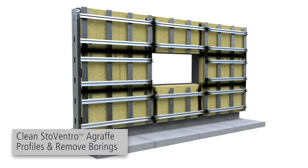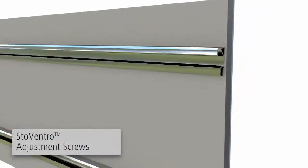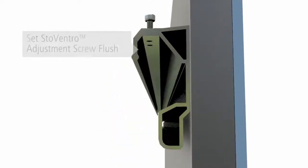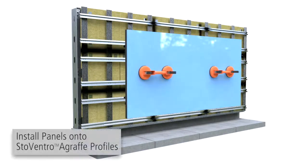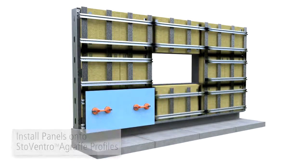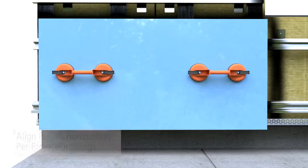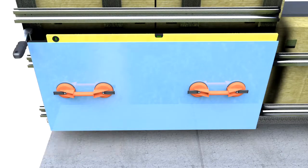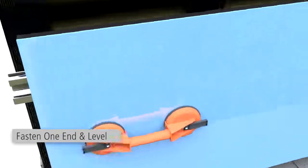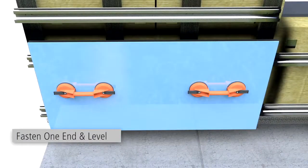Prior to glass installation, clean the agraf profiles and remove borings. On both sides of the panels, screw StoweVentro adjustment screws into the panel profile. Set the screw flush for maximum engagement. Using suction cups for lifting, install glass panels onto the agraf profiles. Align panels horizontally according to project-specific drawings. Level panels vertically using adjustment screws. Fasten the panel on one end and level and complete fastening per project-specific drawings. See design guide for other fastening options.